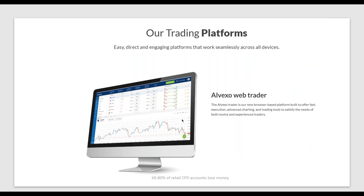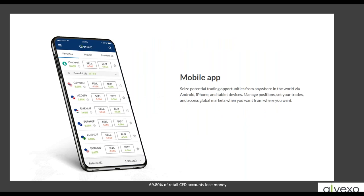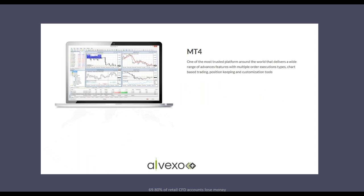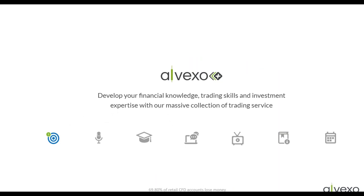When you trade with Alvexo, you have many choices to customize and personalize your trading. You can decide to trade on our web trader, which is easily accessible with any internet-connected device — you can trade anywhere, at any time, on any device. You can jump from one platform to the next and your data, open trades, and history follow you. You can also download our mobile app for Android, iPhone, and tablet, or download the MT4 terminal, the most professional trading environment available to traders today.